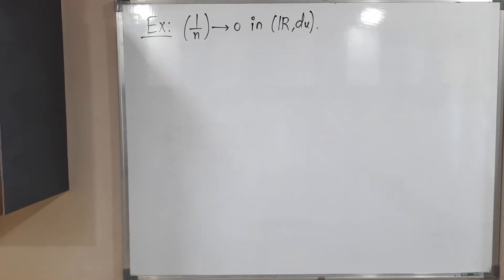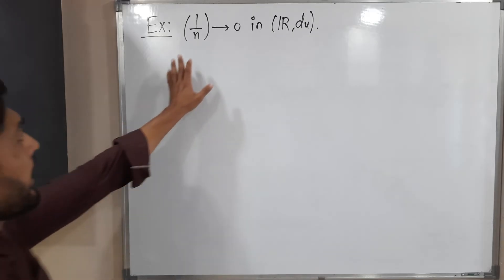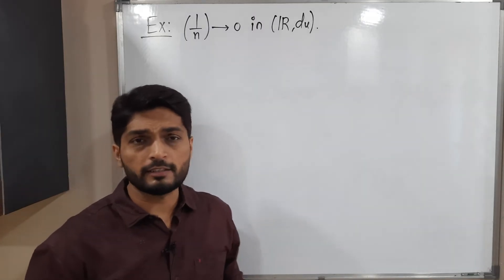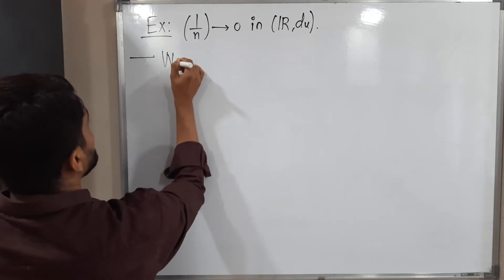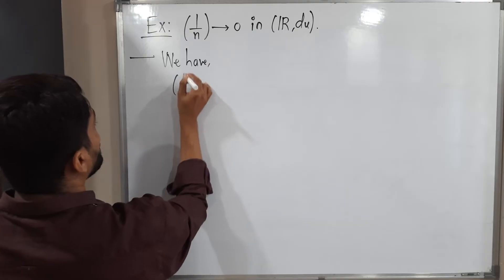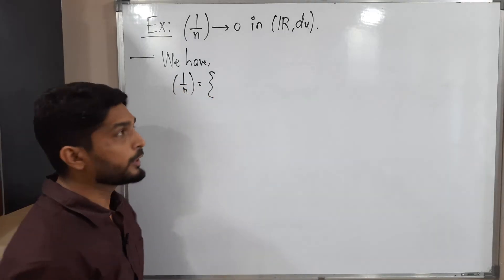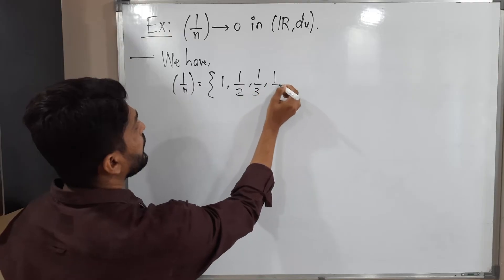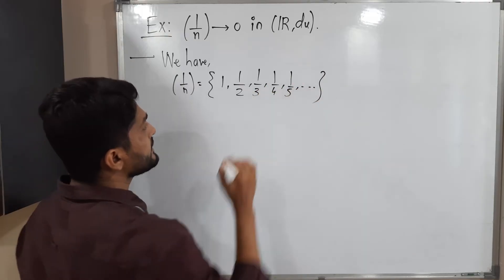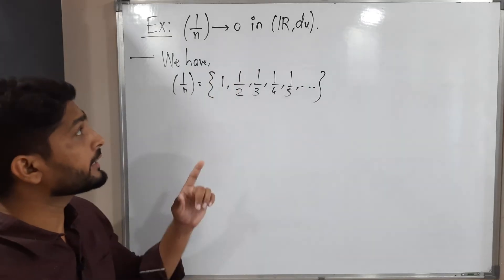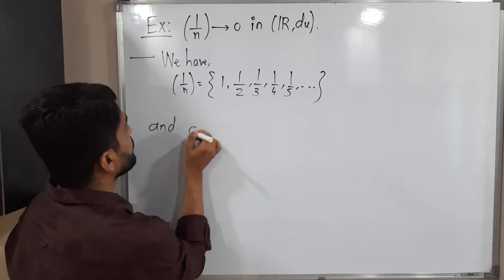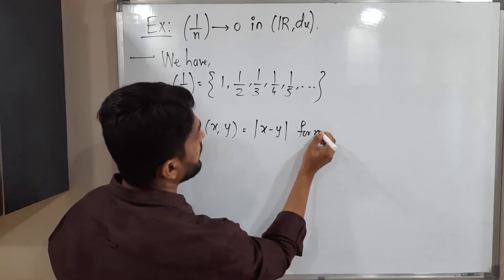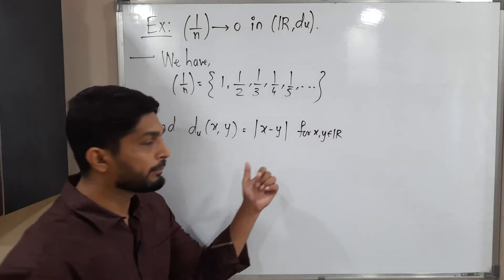Let us discuss an example. We have the sequence 1/n, and we have to prove that it converges to zero with respect to d_u, the usual distance. The sequence has terms: 1, 1/2, 1/3, 1/4, 1/5, and so on. The usual distance d_u is defined as |x − y| for x, y belonging to ℝ. With this metric, we have to prove that the sequence is convergent.